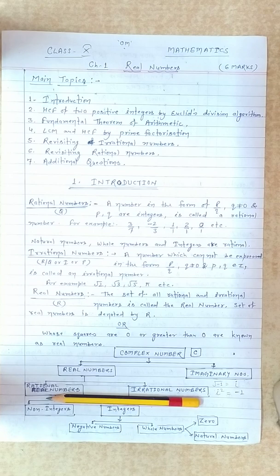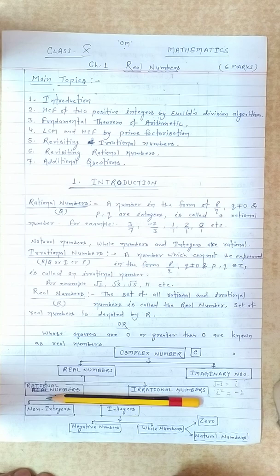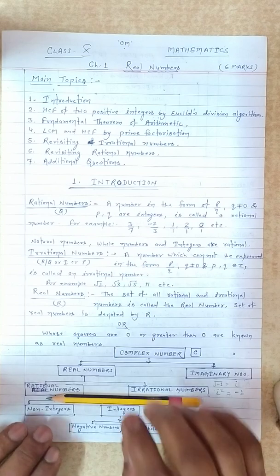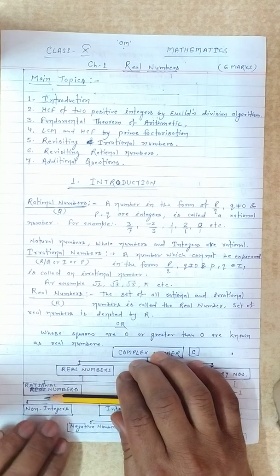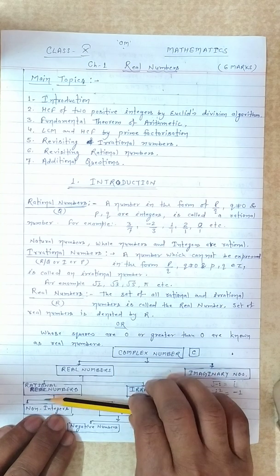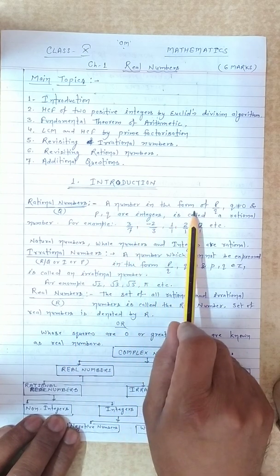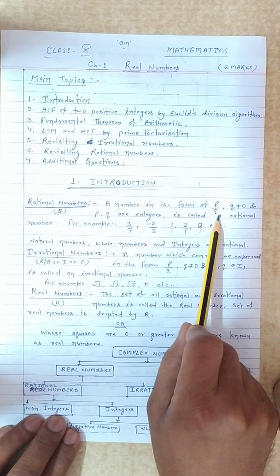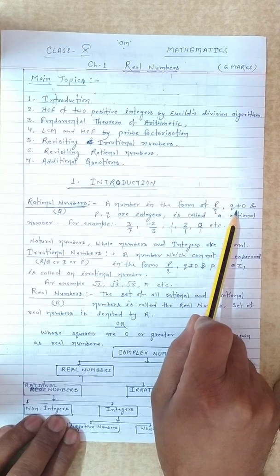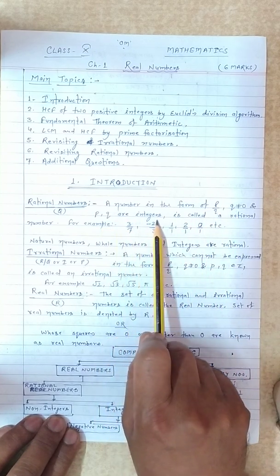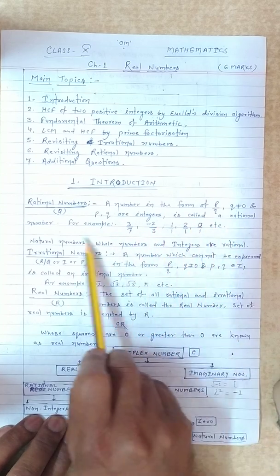If you combine all these numbers together, the set is called real numbers. A number in the form of p upon q, where q is not equal to 0 and p, q are integers, is called a rational number.